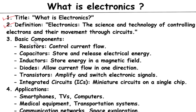Basic Components of Electronics: to better understand electronics, it's important to know about its basic components. The building blocks of electronic systems include resistors, capacitors, inductors, diodes, transistors, and integrated circuits (ICs). These components are interconnected in various ways to create functional electronic circuits.